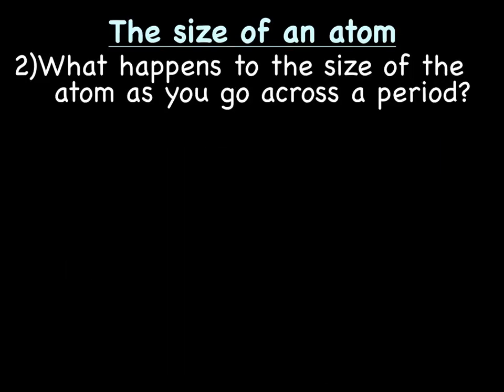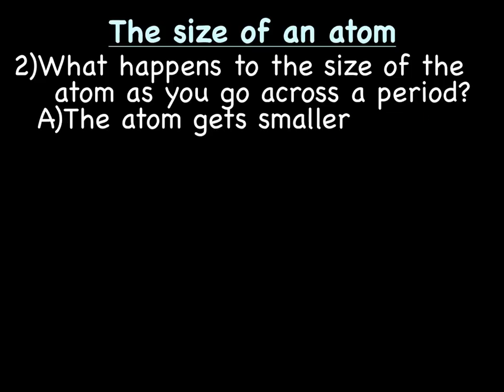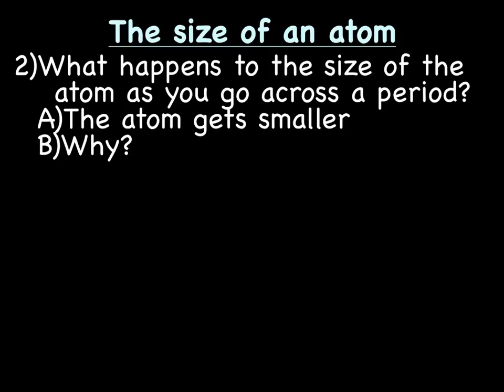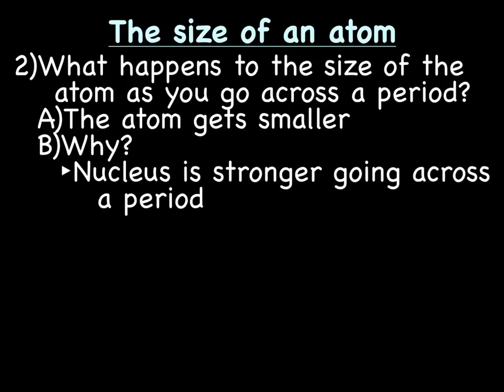What happens to the size of the atom or atomic radius as you go across a period — going this way? Well, the atom gets smaller. What's happening to the power of the nucleus as we go left to right across a period? The nucleus is getting stronger as we go across a period.